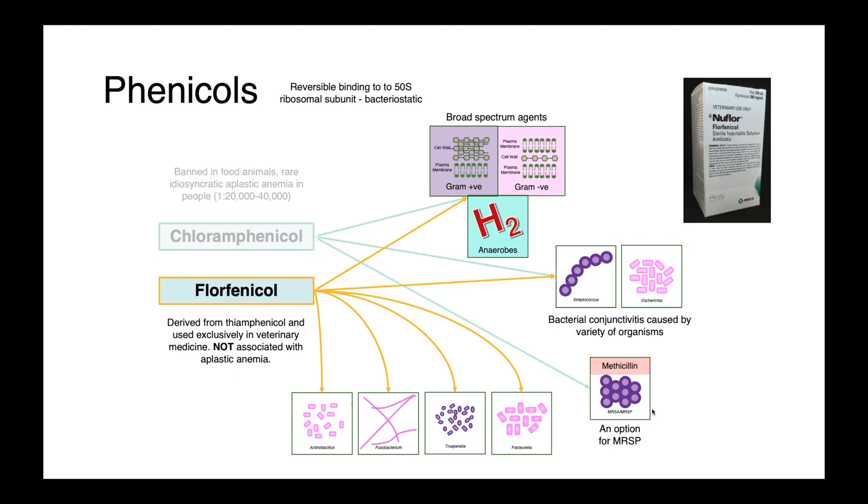Florfenicol has a very similar mechanism of action and spectrum of activity, but it is not associated with aplastic anemia, and so it is actually widely used in veterinary medicine. This drug has activity against all of the aforementioned organisms, plus Pasteurella, Trueperella, Fusobacterium, and Actinobacillus. And for this spectrum of activity, it finds widespread use in agricultural settings.